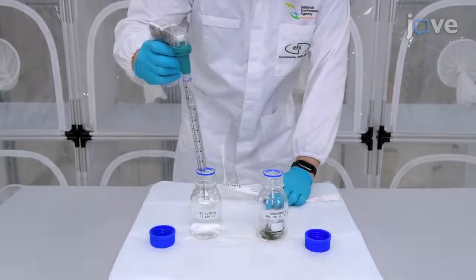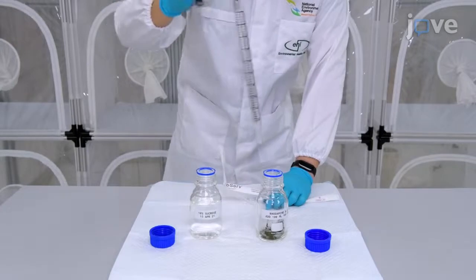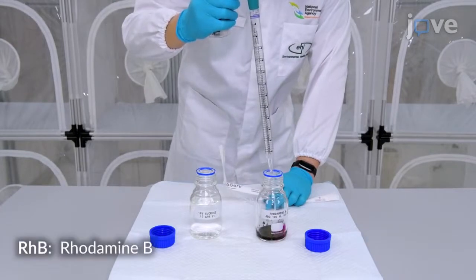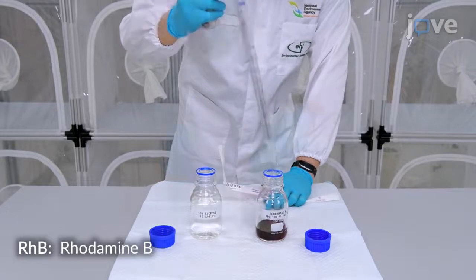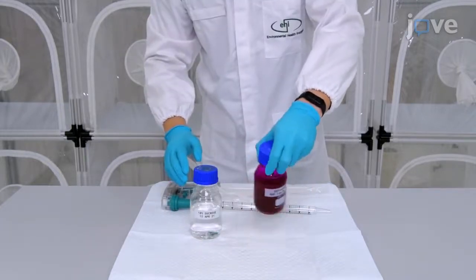To prepare the 0.2% Rhodamine B sucrose solution, dissolve 200 mg of Rhodamine B powder for every 100 ml of 10% sucrose solution. Mix well to ensure that all the powder is dissolved.